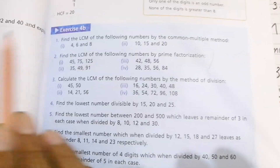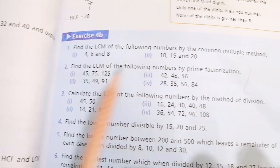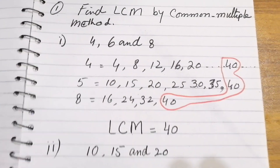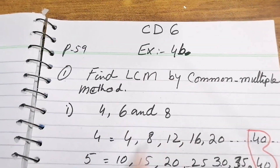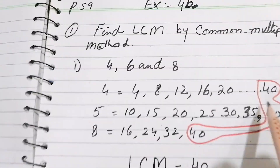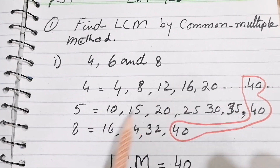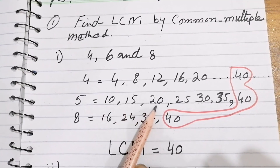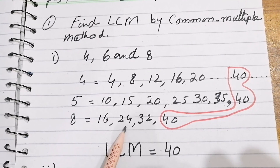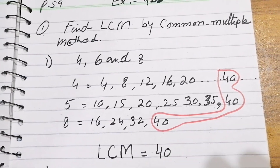Exercise 4B, Question 1: find the LCM of the following numbers by the common multiple method. For the first question, numbers 4, 6, and 8 are given. Multiples of 4 are: 4, 8, 12, 16, 20 — we take up to 40. Multiples of 6: 6, 10, 15, 20, 25, 30, 35, 40. Multiples of 8: 8, 16, 24, 32, and 40. So 40 is the answer — it is common in all three numbers.